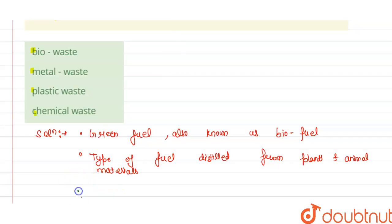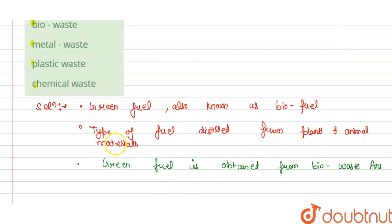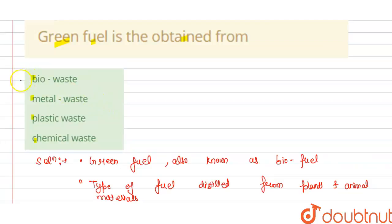that green fuel is obtained from bio waste, and this is the answer for the question. So green fuel is obtained from bio waste. From this we can say that option A is correct. Thank you.